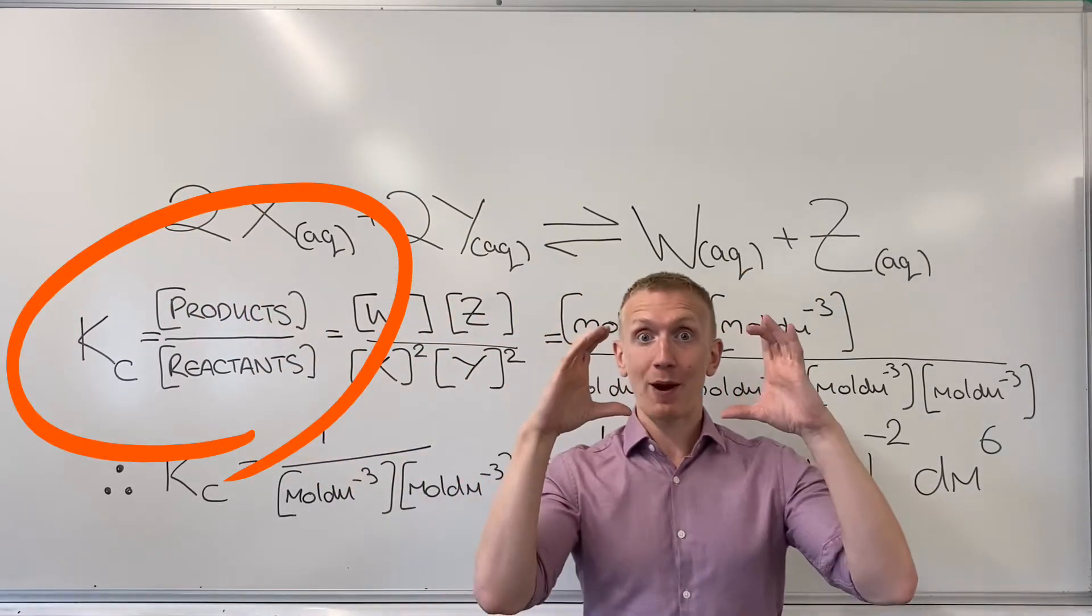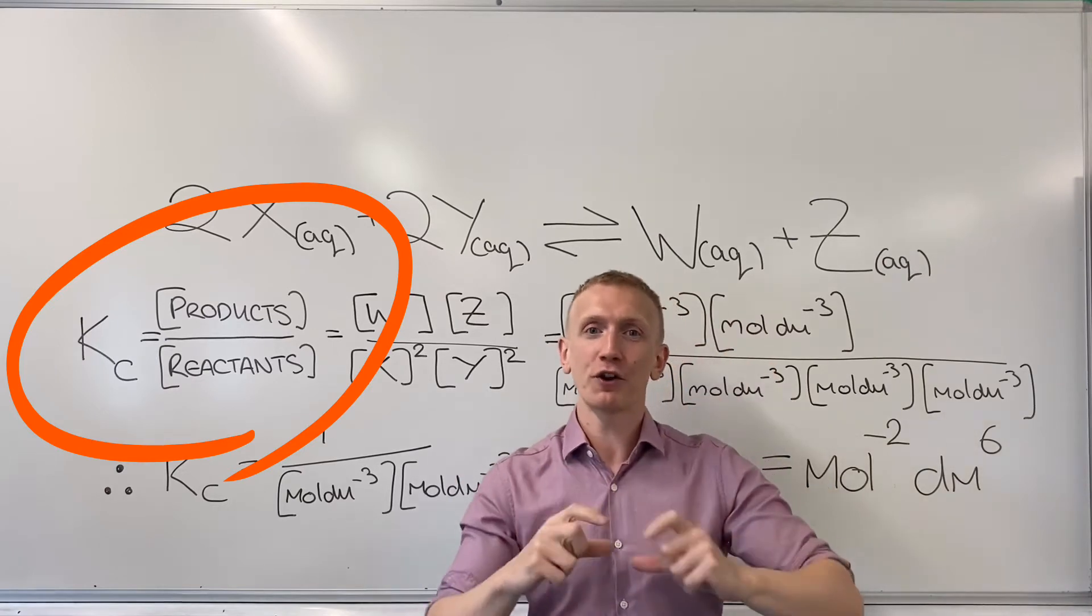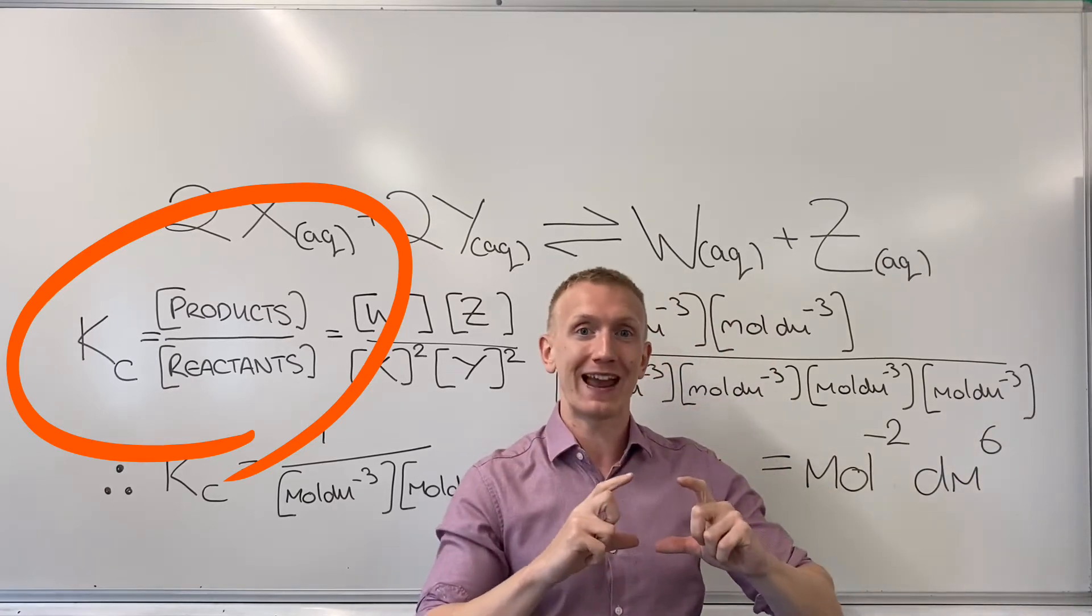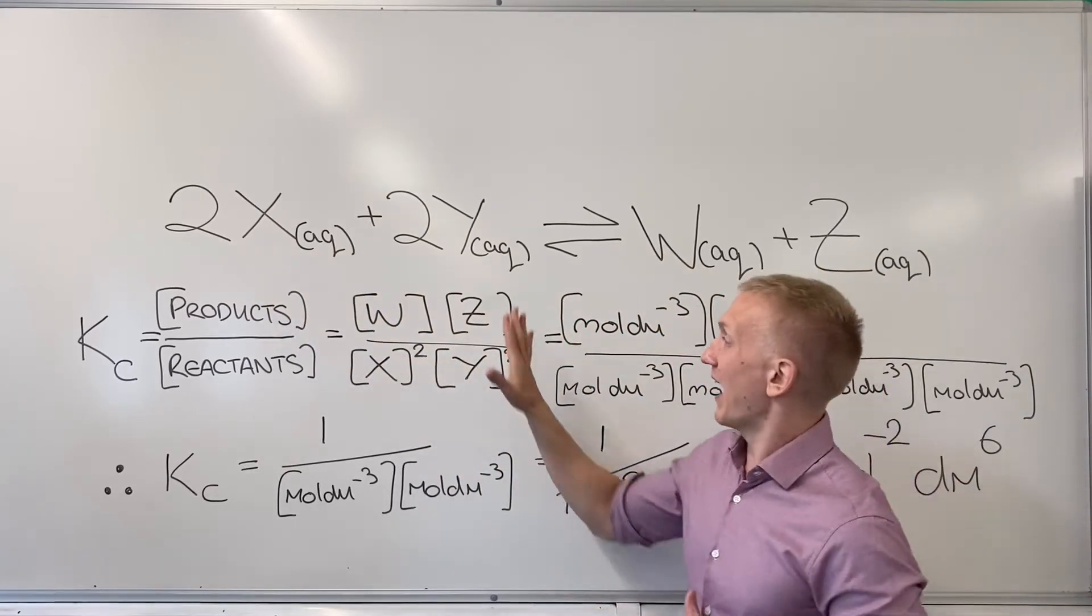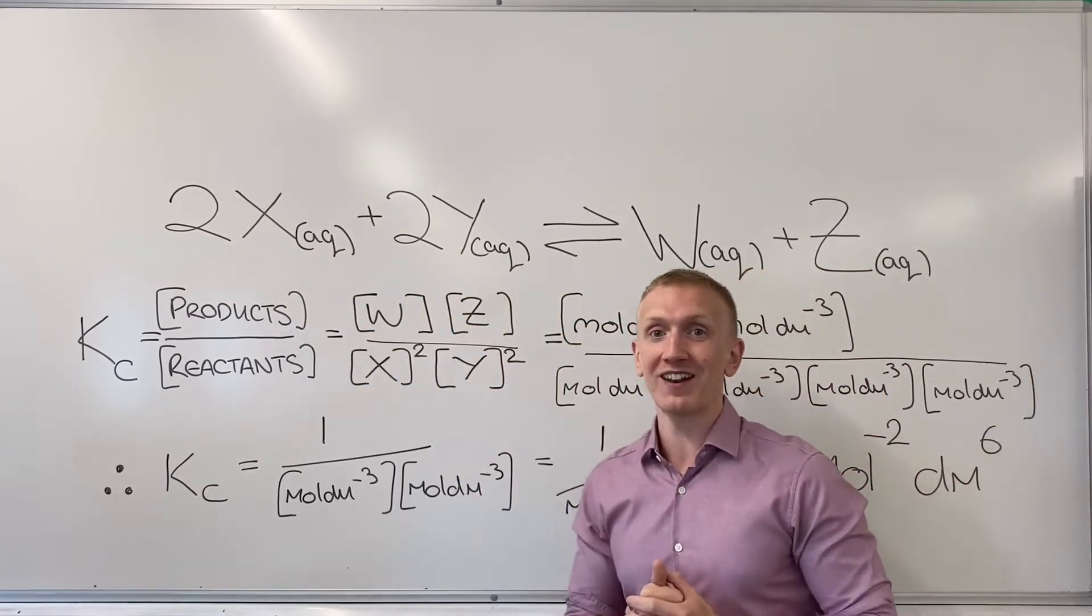So I've got my Kc starting point here. Kc is always square brackets remember. Concentration of the products divided by the concentration of the reactants. And so making sure that I put the coefficients in as powers I can arrange my Kc expression like that.